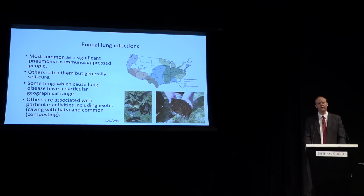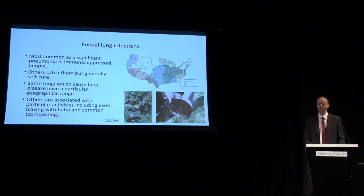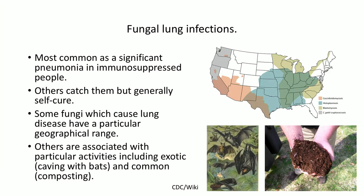The final classical group is fungal lung infections. These infect many of us, but the immune system usually deals with them. Fungal pneumonia is relatively rare. Some fungi have particular geographical ranges — a CDC map of the USA shows which fungi can cause pneumonias in different regions. Some risks are location-based, others activity-based: for example, certain fungi are associated with crawling through caves with bats, or with composting.